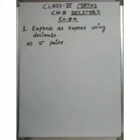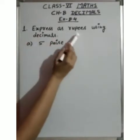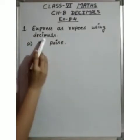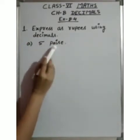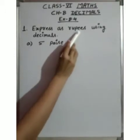Jai Hind students. We are doing Chapter 8 Decimals, and today we will do Exercise 8.4. In this exercise, the first question is to express as rupees using decimals. We have been given the amount in paise and we need to express it in rupees.